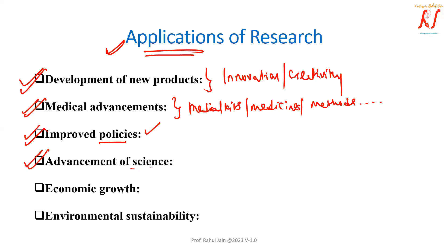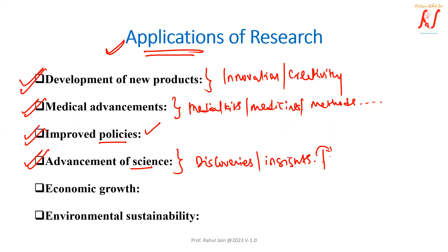Advancements of science. With the help of research we can make discoveries and gain insights into new ideas. With the help of research there can be a lot of information that we can use for advancements in scientific tools and scientific discoveries — whether there is life on different planets, what their temperature is, and everything else. So advancements of science represent a lot of applications.